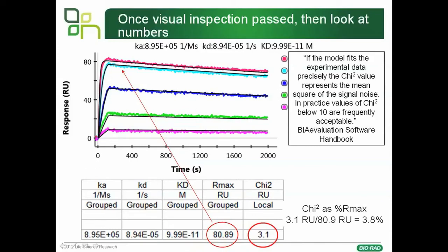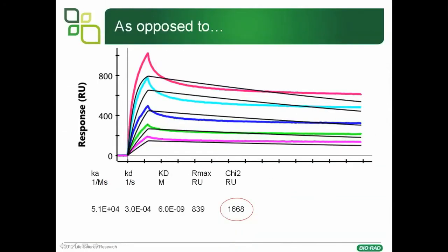Many people quote the chi-squared as a percentage of the Rmax, and want chi-squared to be less than 5% to 10% of the Rmax. In the example here, the Rmax is 80 and the chi-squared is 3.1, so it's less than 4%, and this would be considered an acceptable fit to the model chosen. As opposed to our badly fitting example, where the chi-squared is actually double the Rmax — this would be a grossly unsuitable fit.